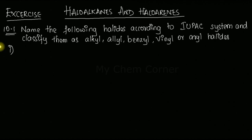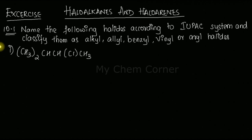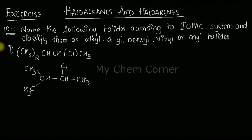For the first compound, the formula given is (CH₃)₂CH–CH(Cl)–CH₃. Let's draw the structure: the CH₃ twice on the left is attached to a carbon, which is single-bonded to a CH, then we have a Cl in brackets on the next carbon, and finally a CH₃ on the right. This is the open structure for the condensed form given in the question.